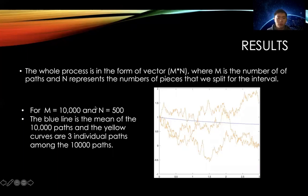This whole process is in the form of a vector M times N. M is the number of paths that we get, and N represents the number of pieces that we split for the time interval from zero to three. For example, if M equal to 10,000, then we have 10,000 paths.